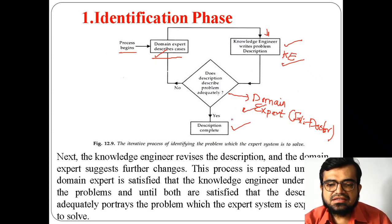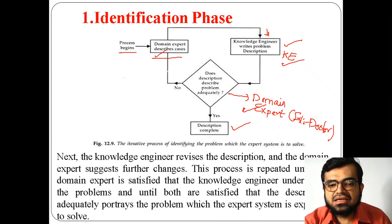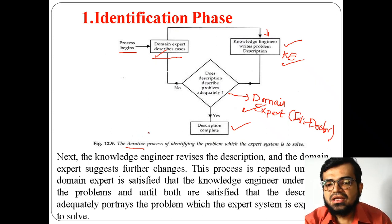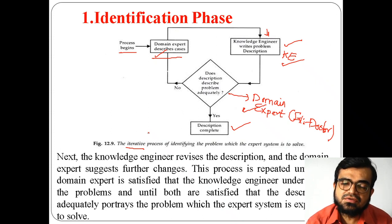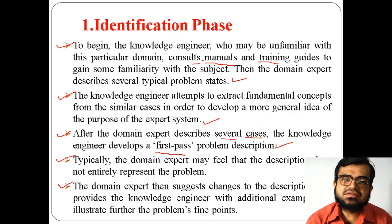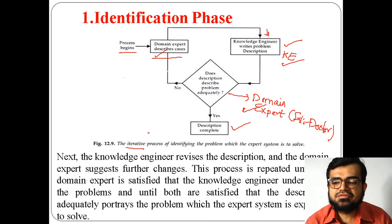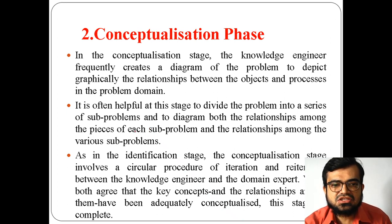This is an iterative process — identifying the problem repeatedly until it is adequately described. The domain expert suggests updates and the knowledge engineer implements them. This is the identification phase, where the problem description is identified and finalized by both people together.